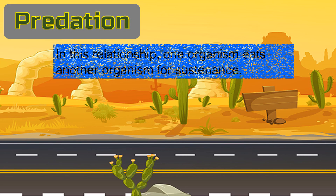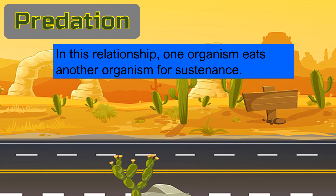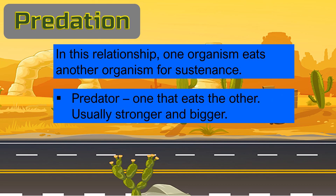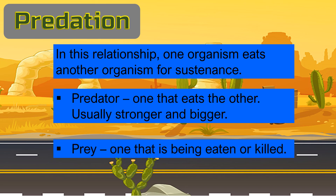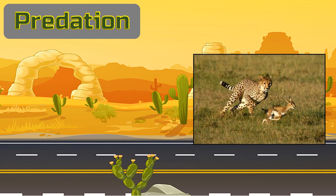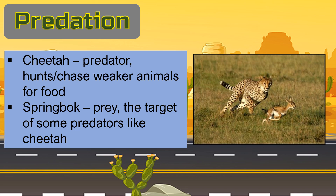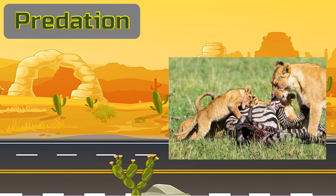Last is predation. This is the relationship in which one organism eats another for survival. The predator is the one that eats other organisms and usually they are bigger in size and stronger. The one that gets eaten is called the prey, who is basically smaller and weaker. Sa predation, ang organismo na mas malaki at mas malakas ay siyang nagbe-benepisyo. Kinakain niya ang maliliit at mas mahina sa kanya. Predator ang siyang nangangain at prey naman ang kinakain. For example, this picture shows a cheetah chasing a springbok for food. The cheetah is the predator and springbok is the prey. Another example is the tiger and zebra.